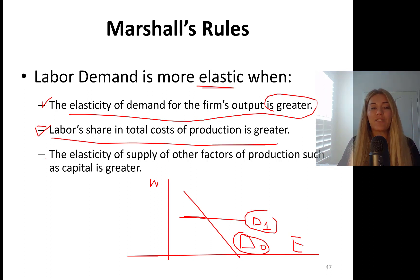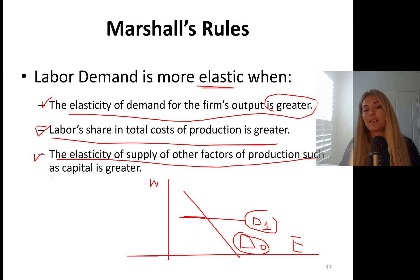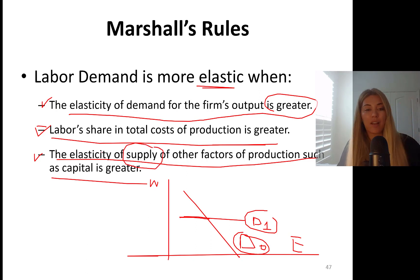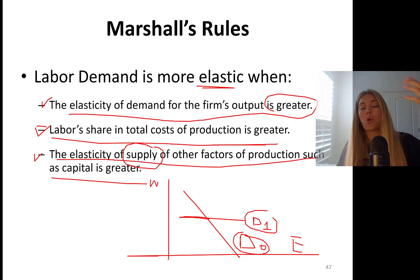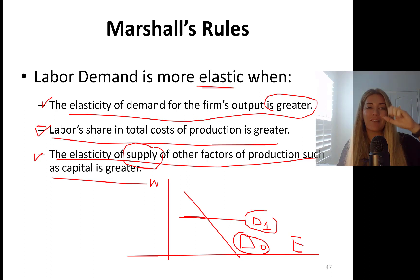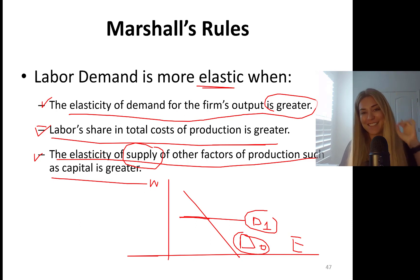The last rule is if the elasticity of supply of other factors of production, such as capital, is greater. So if the price of capital goes up and the supply of capital goes up even more in percentage terms, then you are going to cut down your labor demand. If the price of labor goes up, does it make sense? I hope it does.